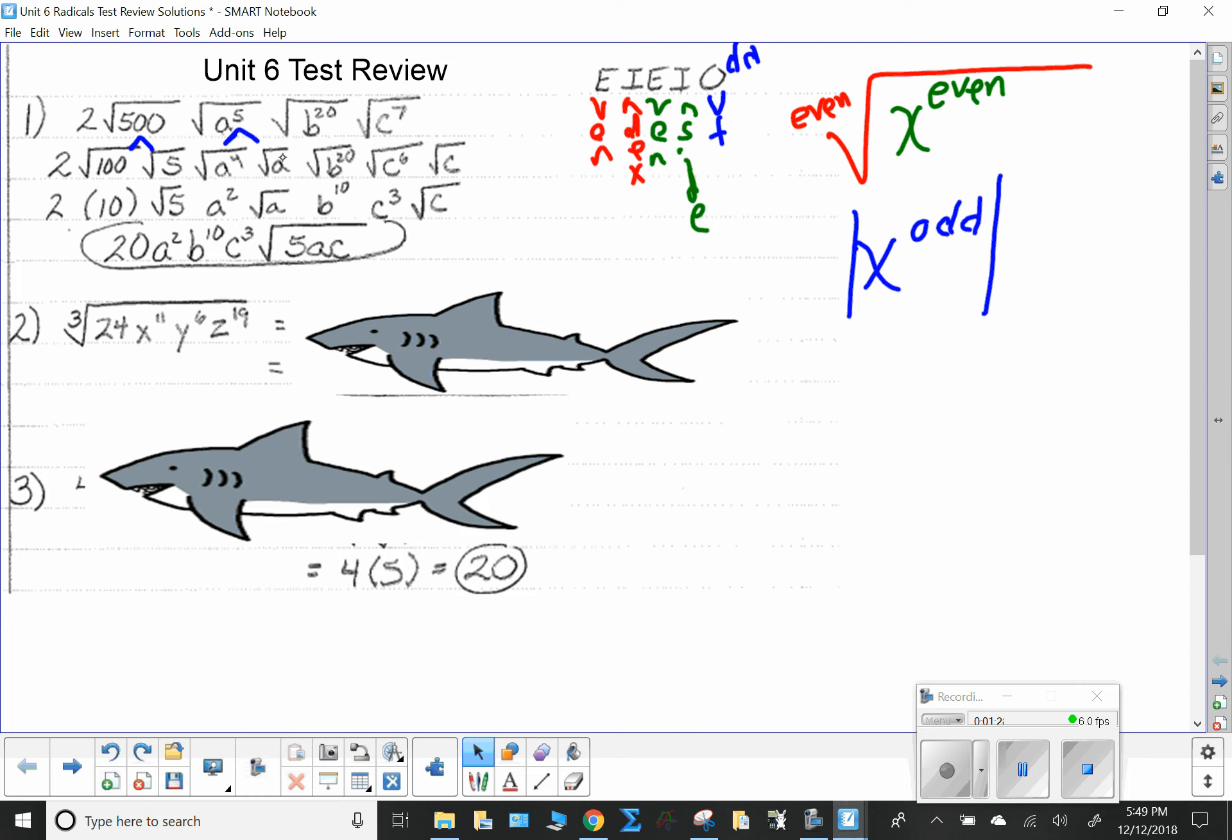b to the twentieth is just b to the twentieth, c to the seventh is c to the sixth and c. Now, notice, I don't care about numbers. I do have, actually, that's not exactly where it's supposed to be.